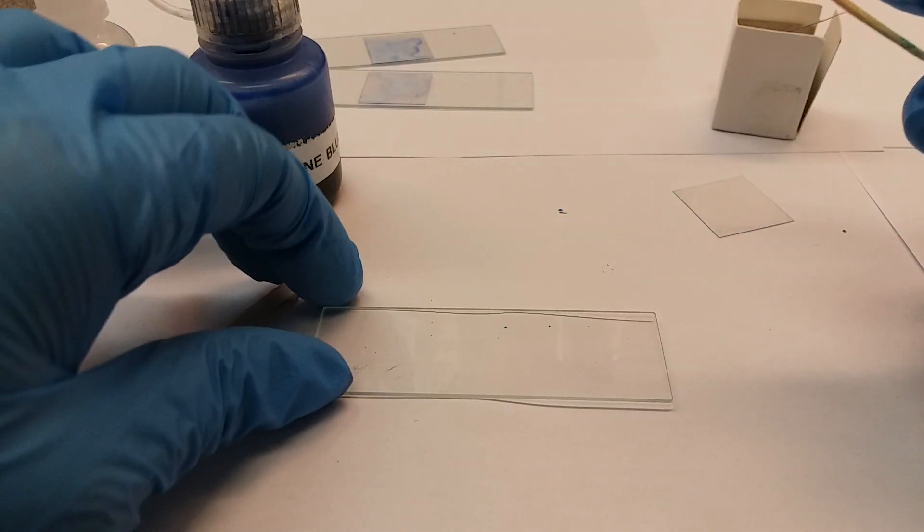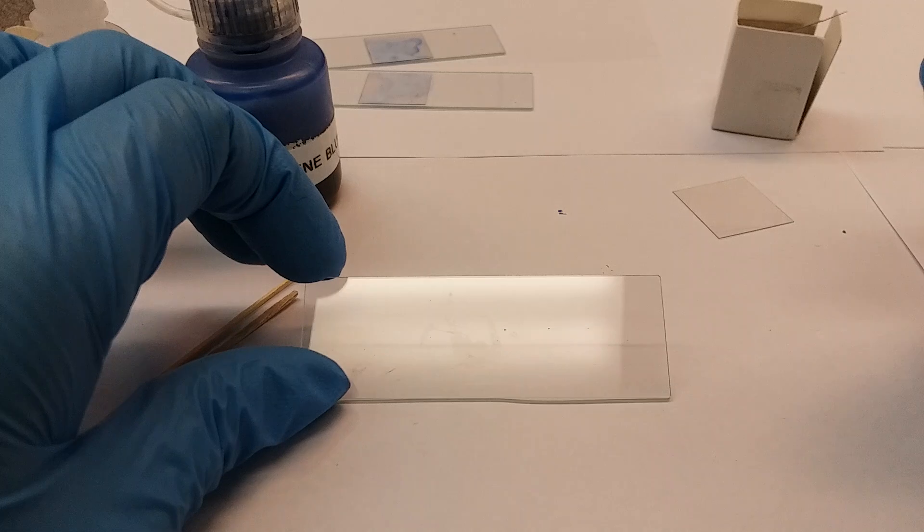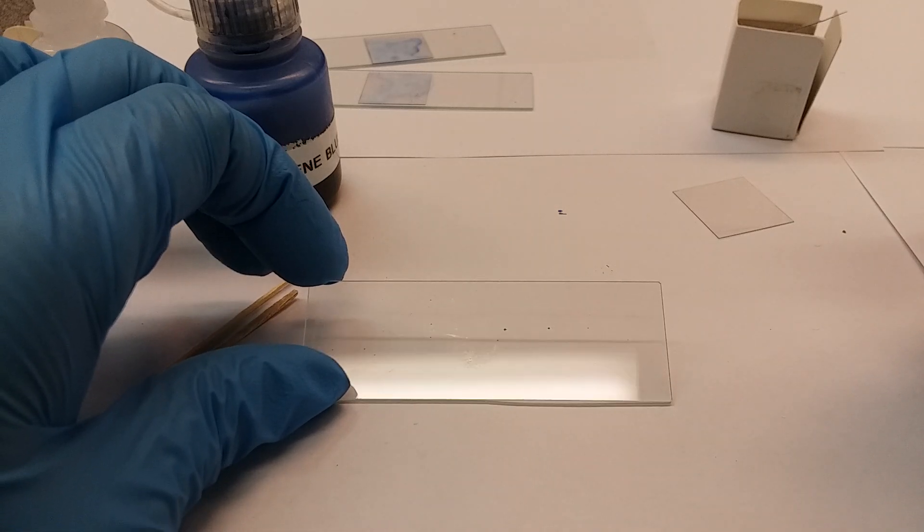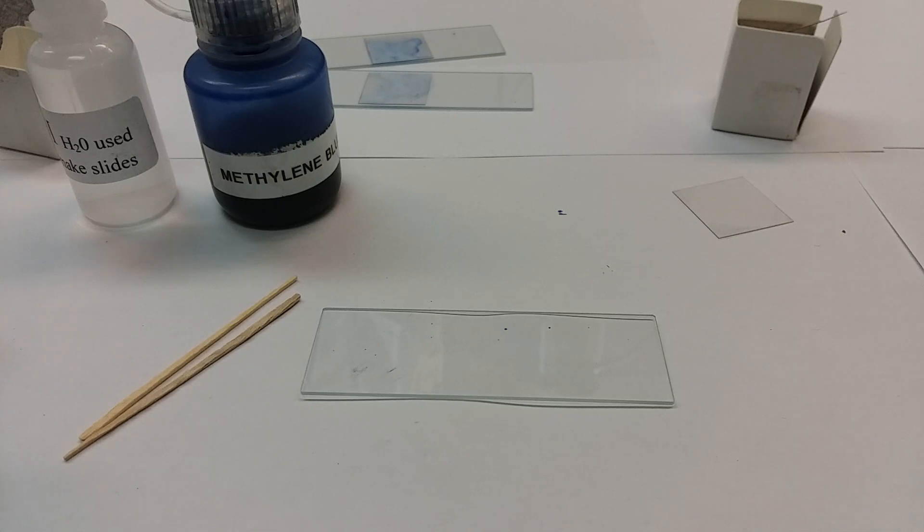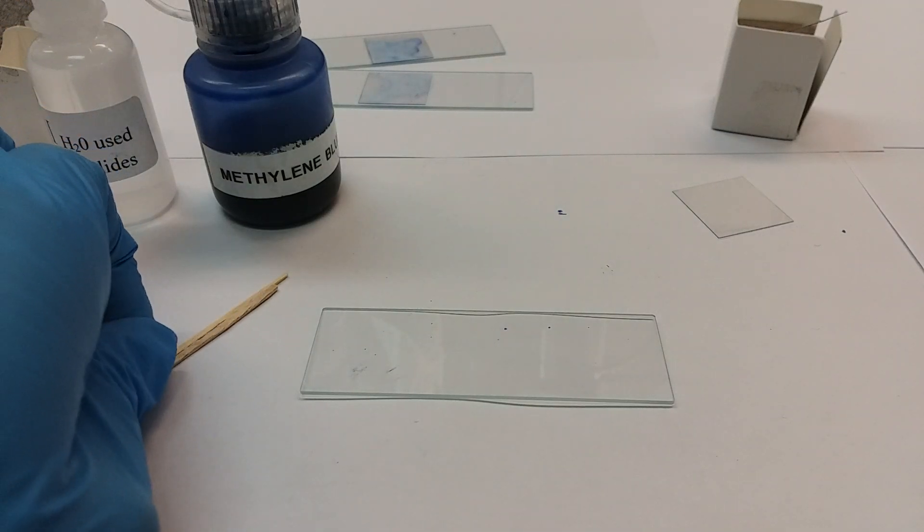I'm going to rub my sample right here on this slide, and you're going to notice a shimmer, a sheen. That right there is what you want - it looks like spit, that's okay, that's perfectly normal. So this one's dirty now, I'm going to put it over here.